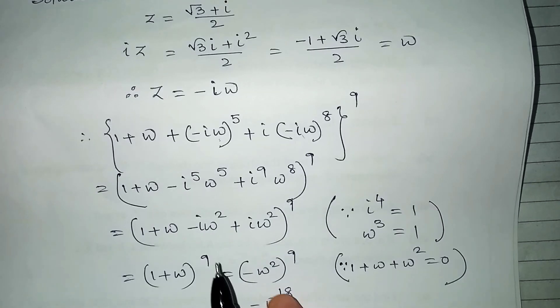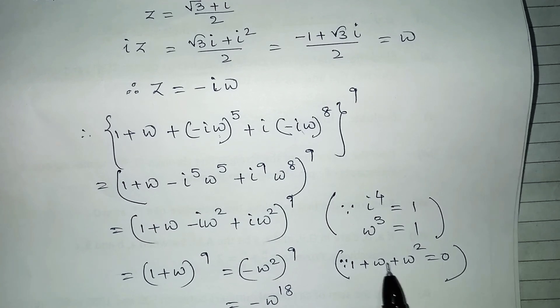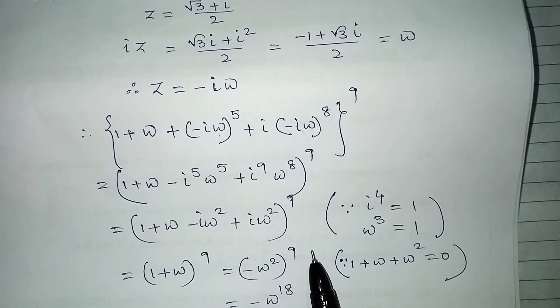So that's why it becomes this one, and this i omega square and these two terms are cancelled with each other. Then one plus omega whole to the power nine. Again, you know one plus omega plus omega square is zero.